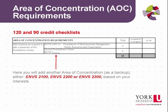This slide shows the area of concentration section, which is the same in both the 120 and 90 credit programs. The Management Foundations course is a requirement for those in the Management Area of Concentration, so you just need to mark a 6 under the appropriate column — Completed, In Progress, or To Do. For your backup area of concentration, choose from: ENVS 2100 for Environment and Culture, ENVS 2200 for Urban and Regional Environments, or ENVS 2300 for Environmental Politics. Mark the course code under Second Foundations Course and record the credits under the appropriate column.